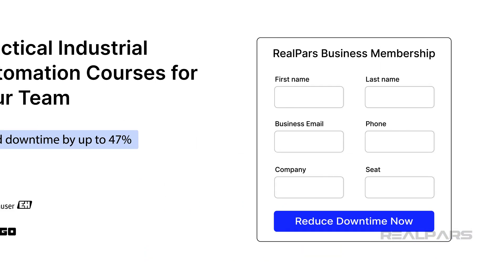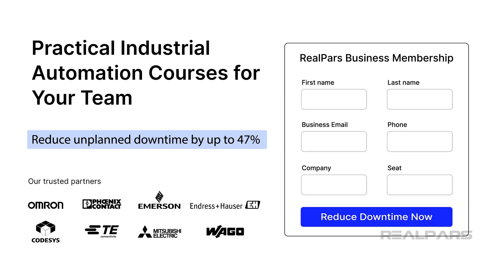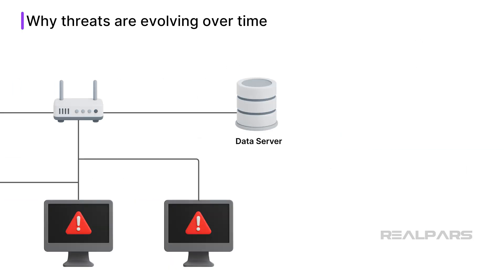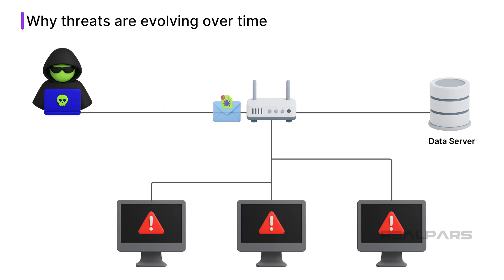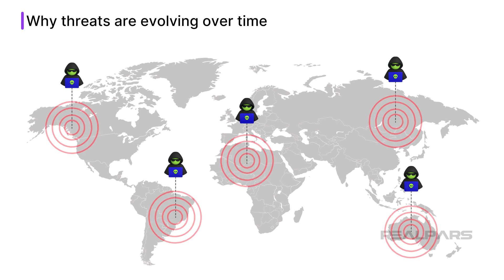Want to level up your team's automation skills? Go to realpars.com/business, fill out the form, and let's get your team started today. OT cybersecurity threats have evolved over time, from simple theft of login credentials and email scams from lone hackers, to multinational crime rings that have devised ways to penetrate OT networks without leaving a trace.